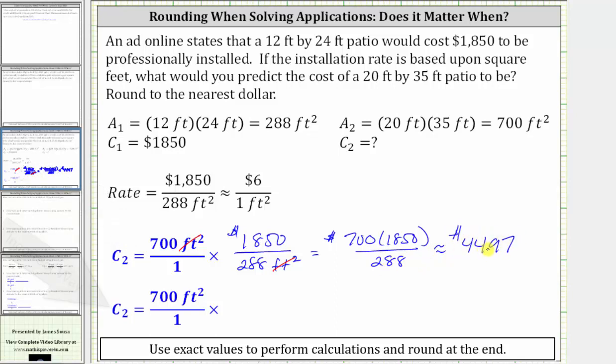Let's see how different the cost would be if we would have used the rounded rate of $6 per square foot. Once again, we begin with the area of 700 square feet, and multiply by the rounded rate of $6 per one square foot.